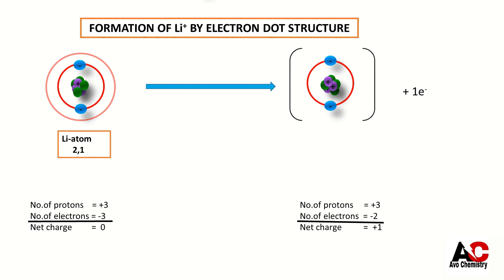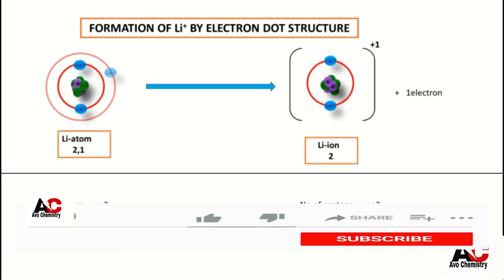Lithium atom gets plus 1 charge after removing an electron. Now it becomes the lithium ion with electronic arrangement only 2. Now it has only the K shell that has 2 electrons. Its configuration is just like the configuration of helium atom. Now the lithium ion is considered stable.